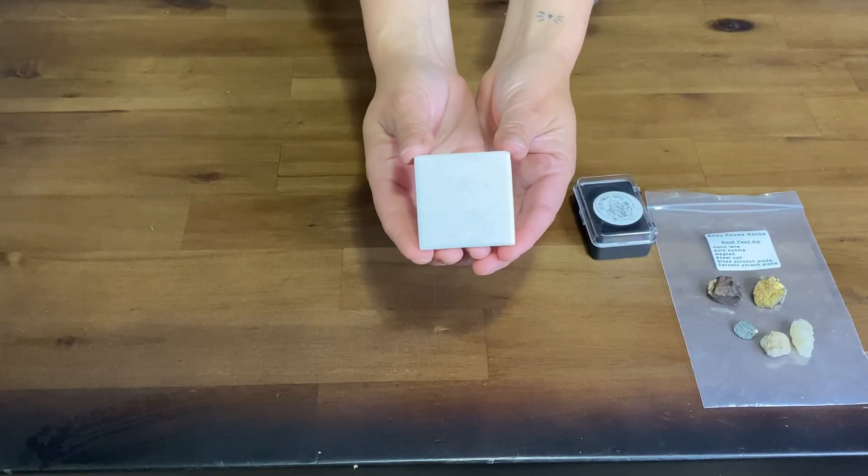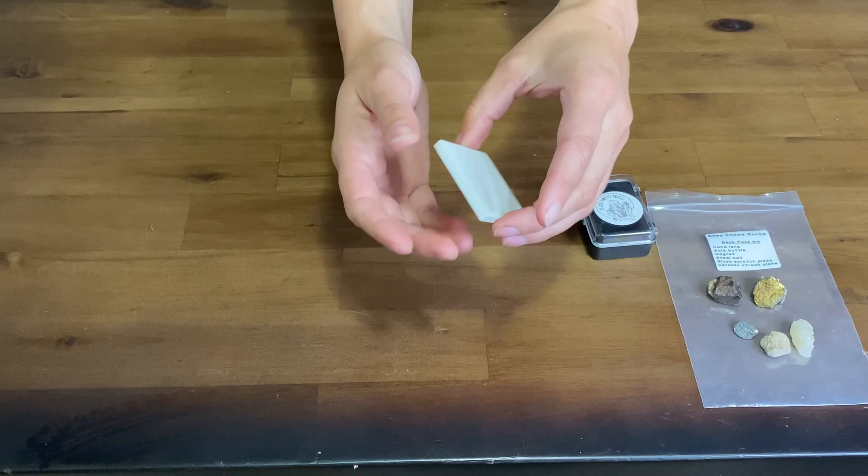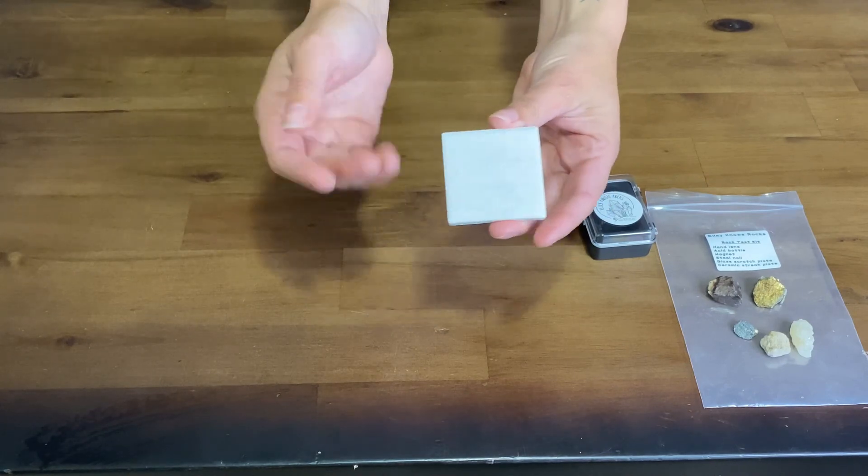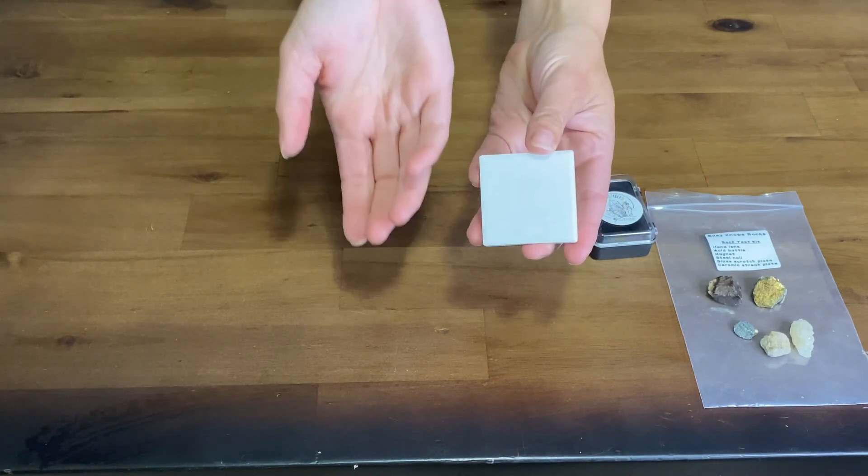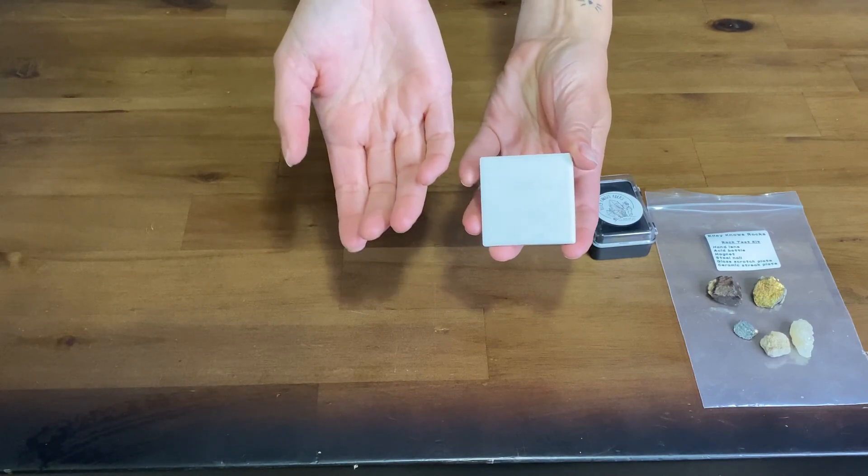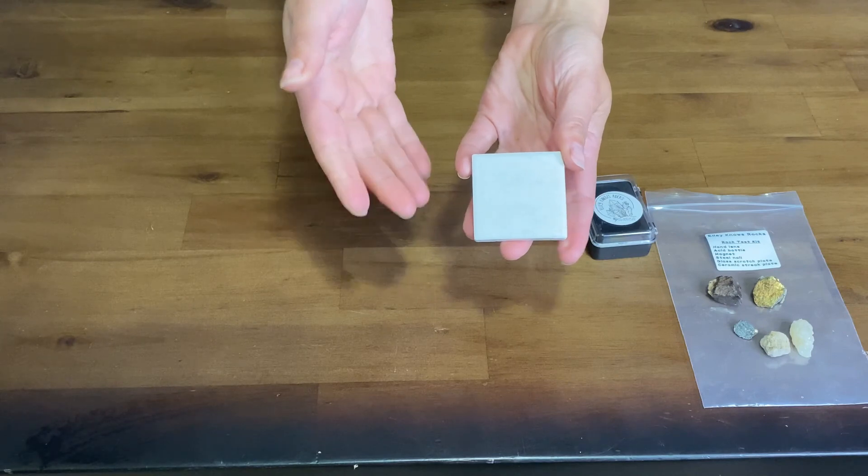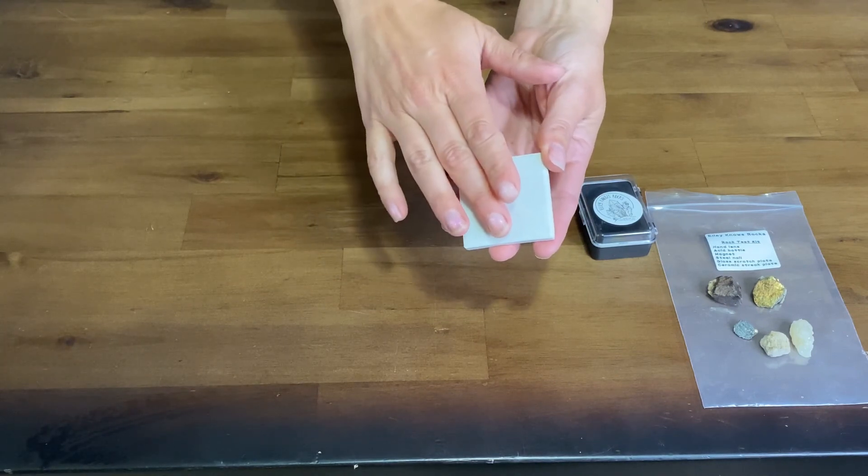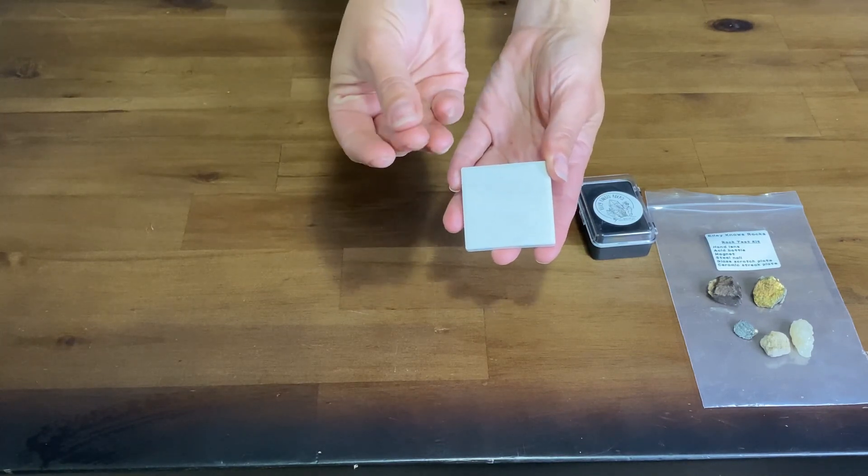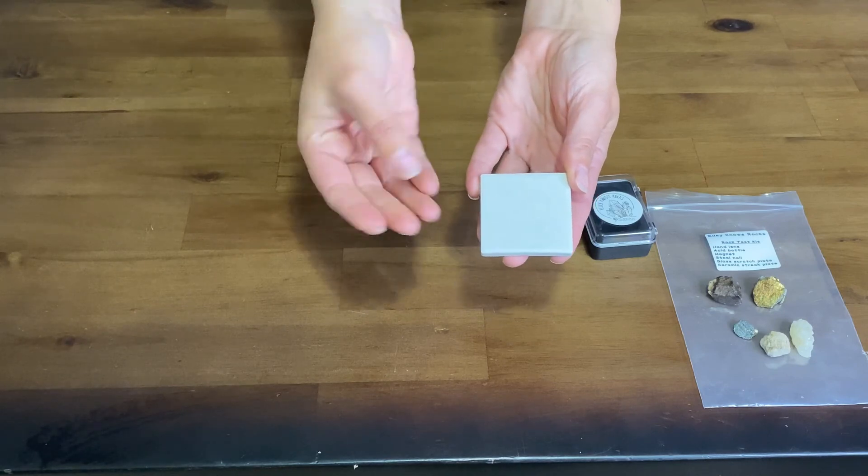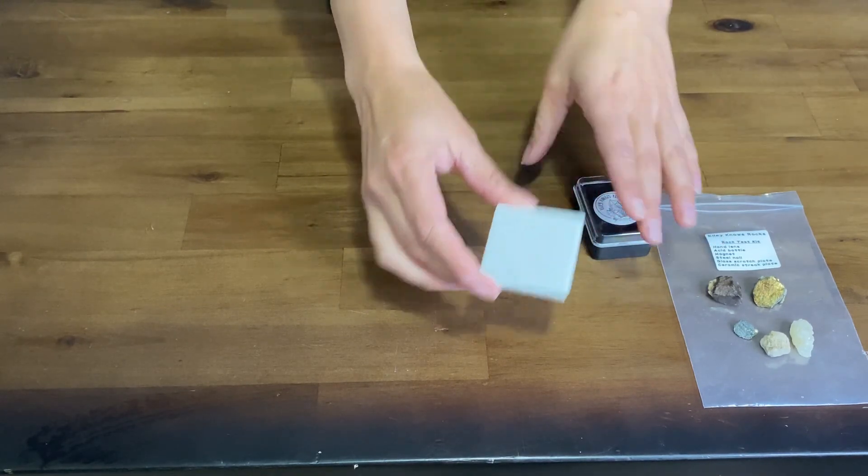A mineral streak plate is made out of uncoated ceramic. They come in white or you can also find them in a darker color like a gunmetal gray or a black to test for minerals that would have a lighter streak. If a mineral does have a lighter streak, you can always wipe off the streak on your finger and see if it's a white or a cream color. Now let's scratch a few minerals to see how this works.